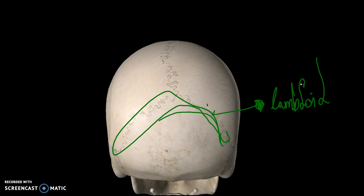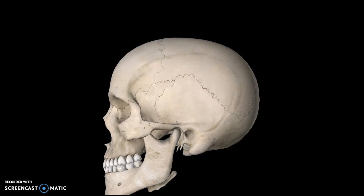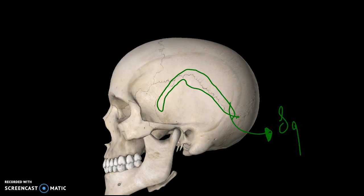The last suture to talk about is the one that separates the temporal and the parietal bone, and this is known as the squamous suture. That's pretty much it for this tutorial — I'll continue the skull in the next one.